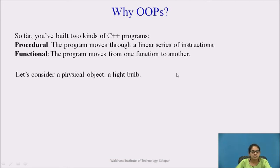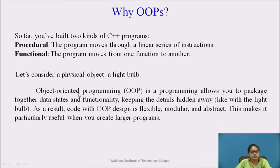Consider the physical object of a light bulb. You are only bothered about turning it on and off; you are least bothered about its internal functioning. Similarly, object-oriented programming allows you to package together data, states, and functionalities, hiding the details that are not required — keeping details hidden away like a light bulb. As a result, code with OOP design is flexible, modular, and abstract.